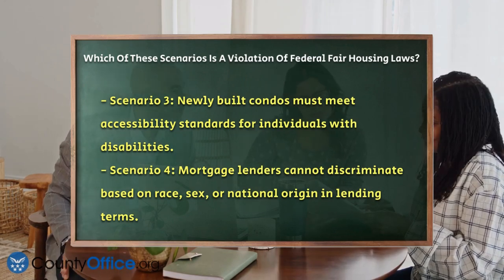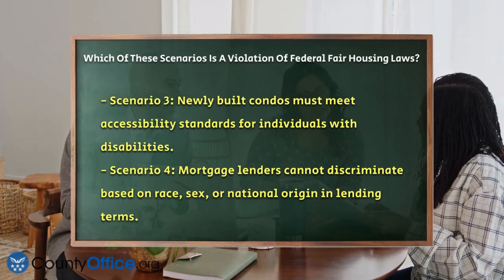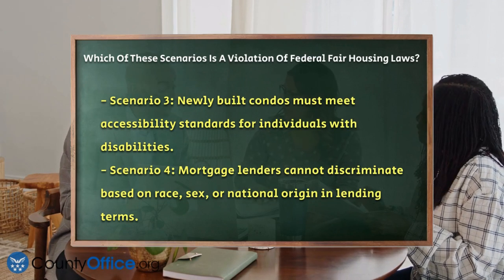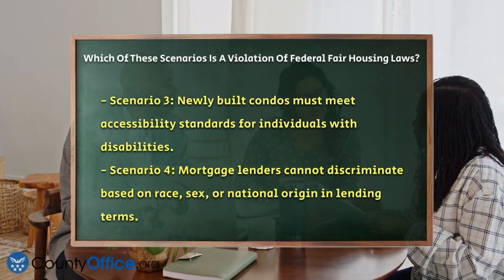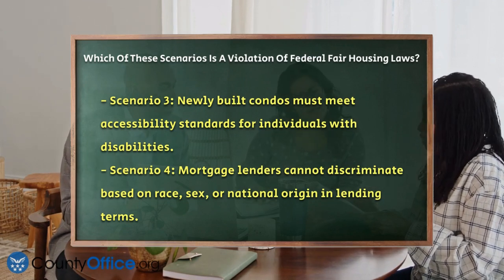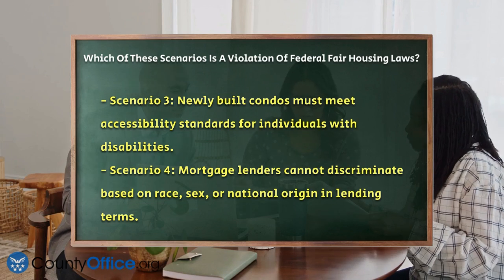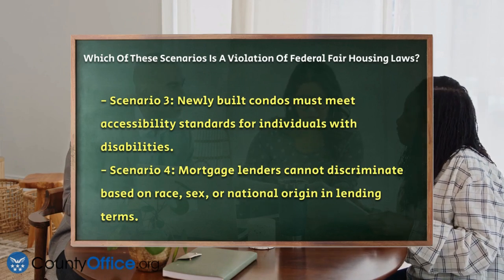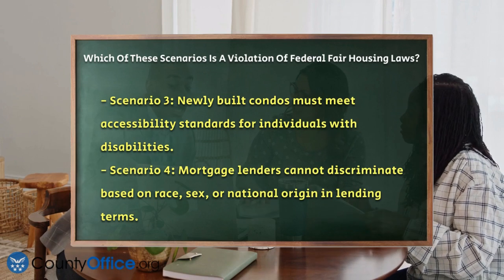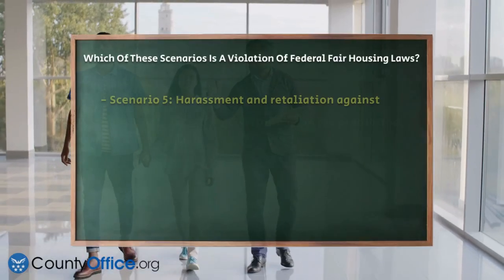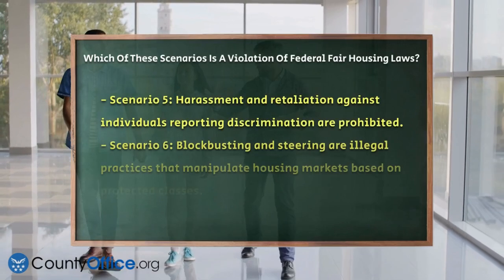Scenario 3: Inadequate building access. If a newly built condominium complex does not meet accessibility standards for people with disabilities, making it inaccessible for potential buyers who use wheelchairs, this is a violation. The Fair Housing Act requires reasonable accommodations and timely repairs to ensure all housing is accessible.